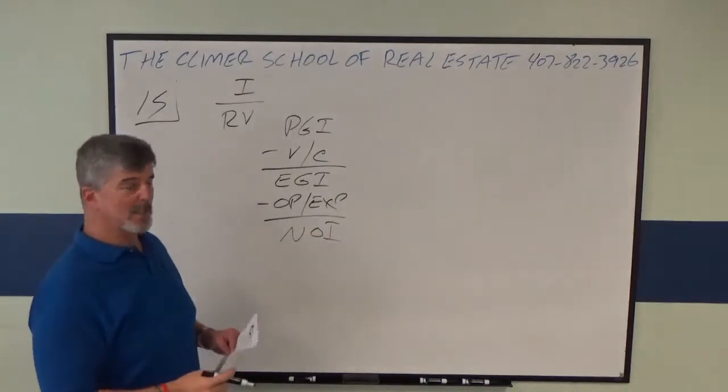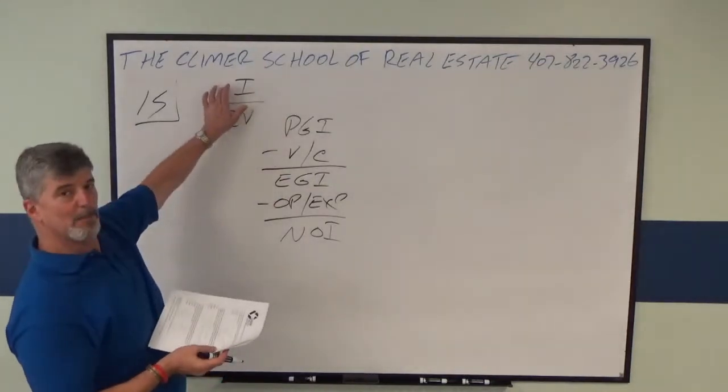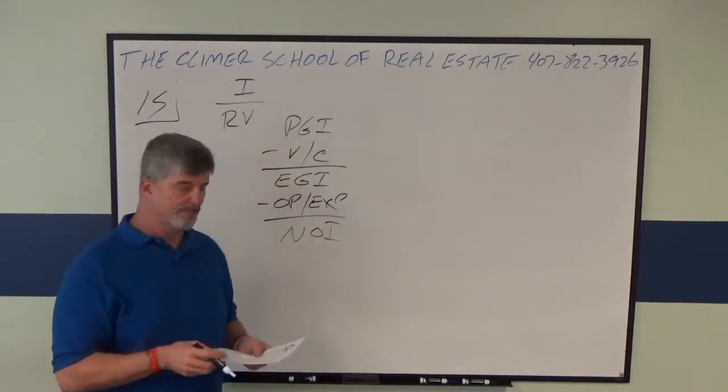And then we also have the income capitalization formula, I over RV. I is net operating income, V is value, and R is capitalization rate.